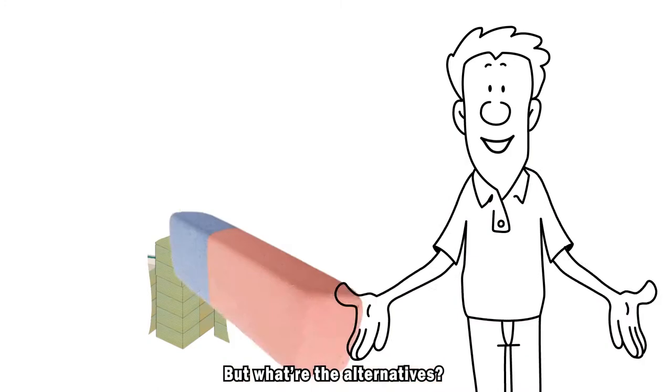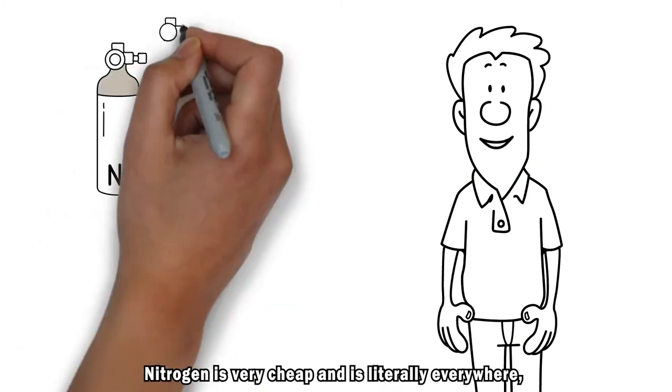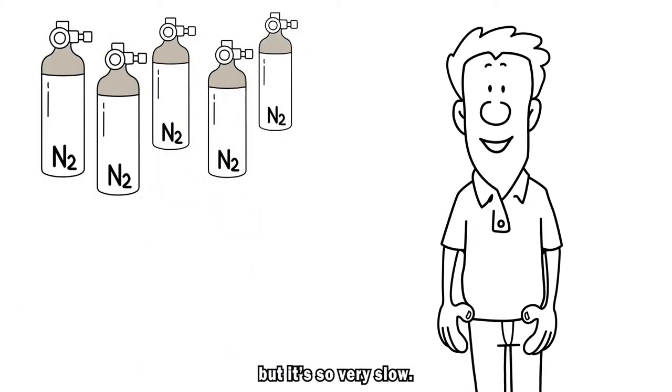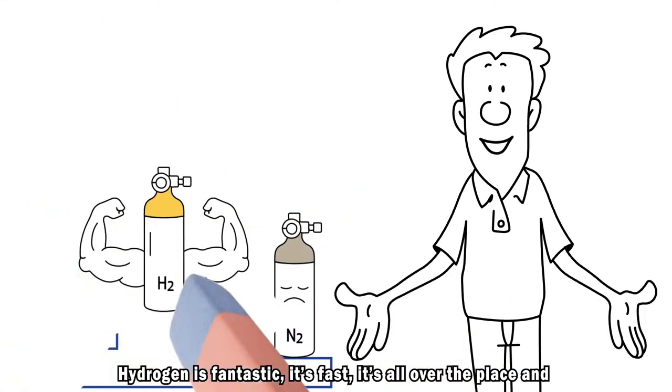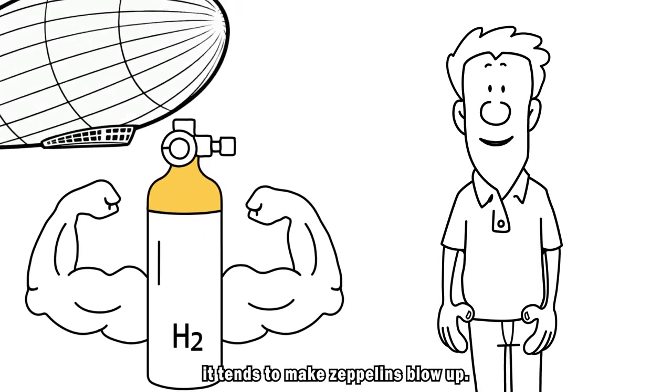But what are the alternatives? Nitrogen is very cheap and it's literally everywhere, but it's so very slow. Hydrogen is fantastic, it's fast, it's all over the place, and it tends to make Zeppelins blow up.